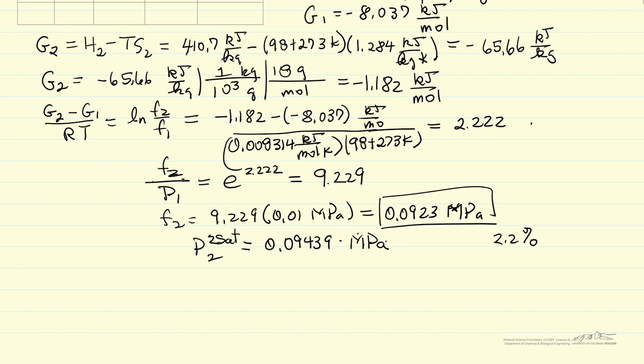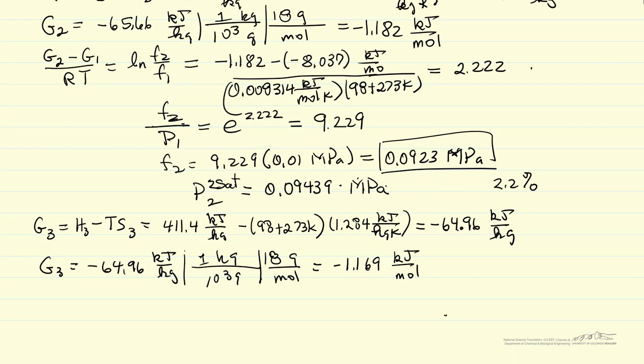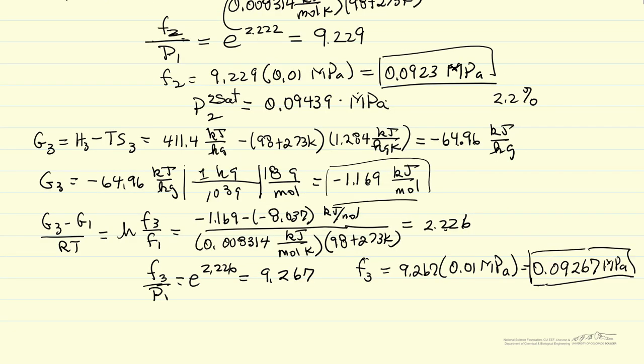Now I can do the same calculation for G3. Since it's similar, I'm just going to pause and write those values down. So first note that Gibbs free energy, G3 at the higher pressure, is slightly different from the value G2. So now I'm going to calculate fugacity three. So the fugacity is slightly higher at the higher pressure, as we would expect.